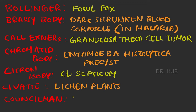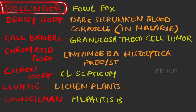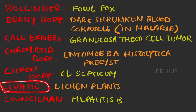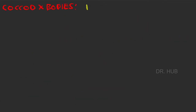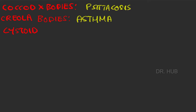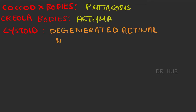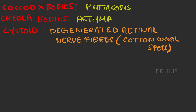Next we have Q8 bodies seen in lichen planus, then Councilman body seen in hepatitis B. Next we have coccoid X bodies seen in cytokosis, and Creola bodies in asthma.